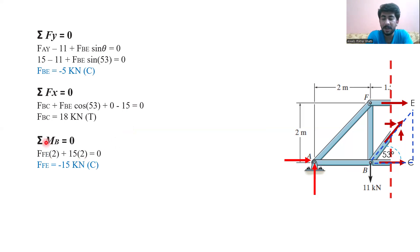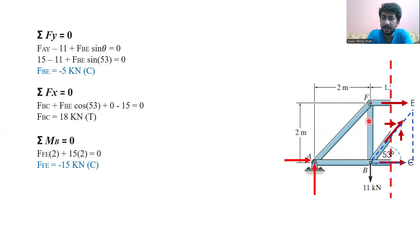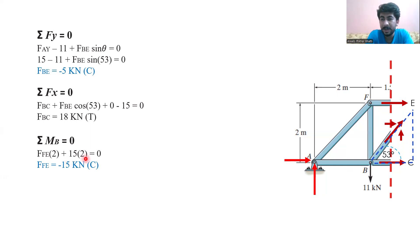Finally, we apply the moment at point B. The member FE acts with a moment arm and has a perpendicular distance of 2 meters, acting in the anti-clockwise direction, so it is positive. Plus, the 15 kilonewton force has a perpendicular distance of about 2 meters. After solving this, we get the force in member FE equal to minus 15 kilonewtons, so this member is also in compression.